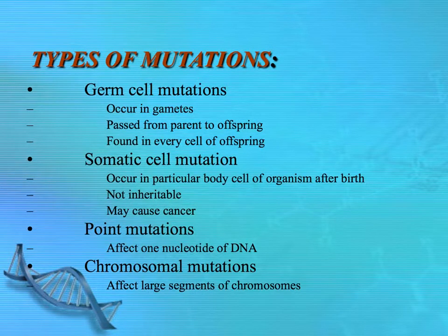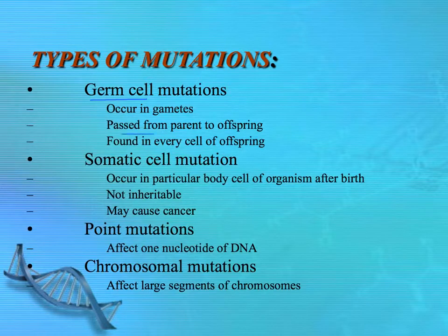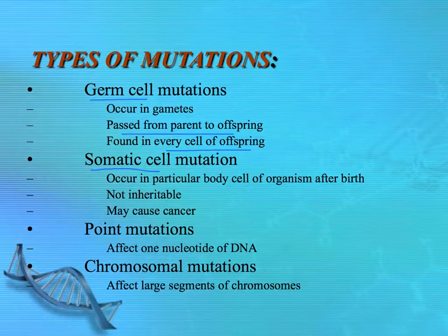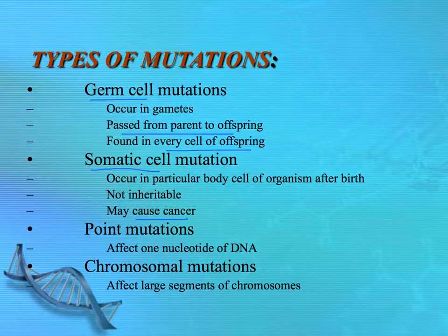There are several ways to talk about types of mutations. If mutations occur in the germ cell or gametes, they are the type that will be inherited — passed from parent to offspring — and will be found in every cell of the offspring, since the organism starts from one cell made from a gamete from each parent. If the mutation occurs in body cells, this is a somatic cell mutation, occurring after birth. It's not inheritable, and these are the types of mutations potentially cancer-causing — a mutation causes a cancer cell to develop, because cancers are clones that continue to divide mitotically, forming a tumor.